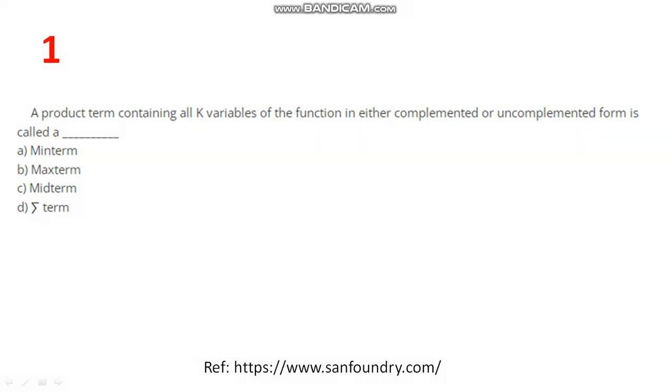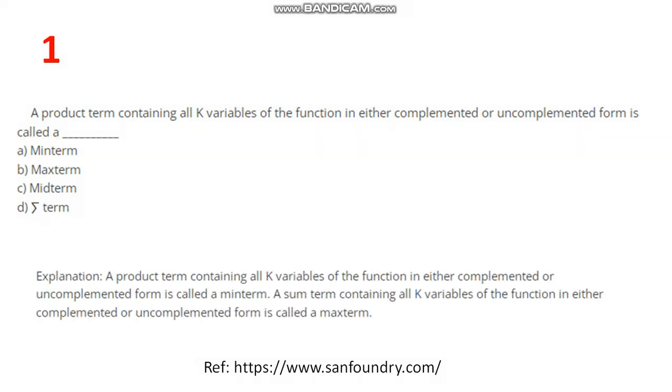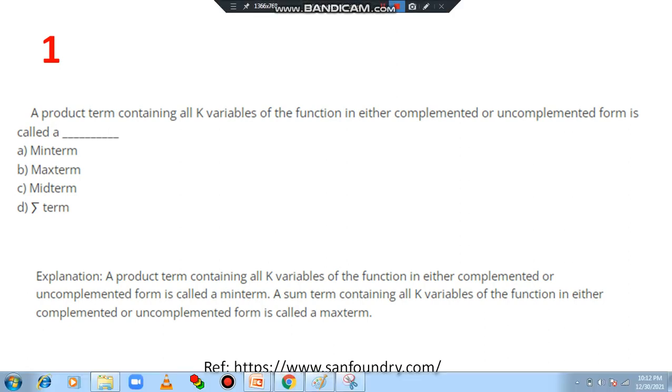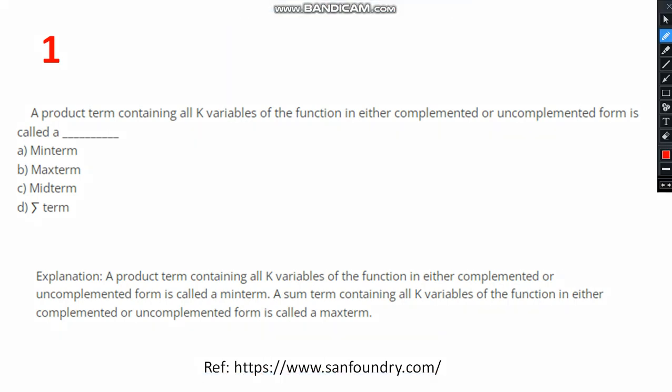A product term containing all k variables of the function in either complemented or uncomplemented form is known as min term. In the opposite sense, a sum term containing all k variables of the function in either complemented or uncomplemented form is known as max term. I request you to note on these two points. Very very important for exam point, competitive exam point of view. You may expect these kinds of questions.